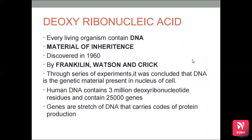Every living organism contains DNA, which is the material of inheritance. It was discovered in 1960 by Franklin, Watson and Crick, who concluded through experiments that DNA is the genetic material present in the nucleus of the cell. Human DNA contains 3 million deoxyribonucleotide residues and contains 25,000 genes. Genes are stretches of DNA that carry codes for protein production.